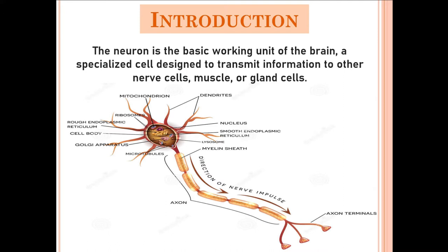The neuron is the basic working unit of the brain. It is a specialized cell designed to transmit information to other nerve cells, muscles and gland cells. As you can see in the picture, this cell is entirely different from other cells like blood cells, muscle cells, cells in the lungs, cells in skin and other types of cells.